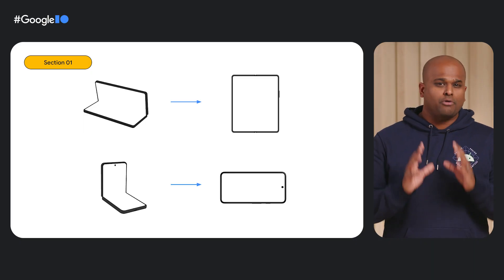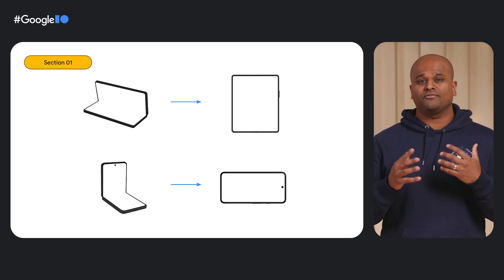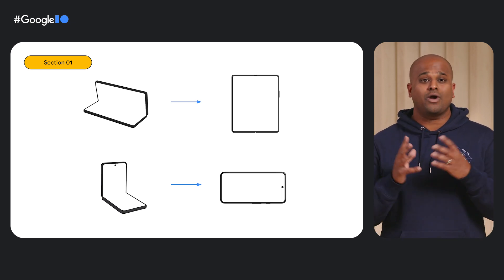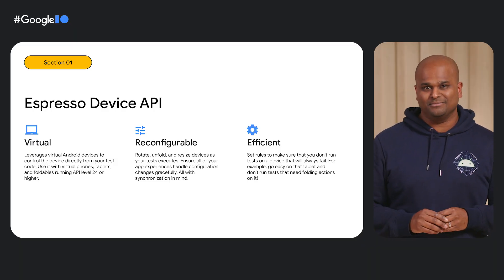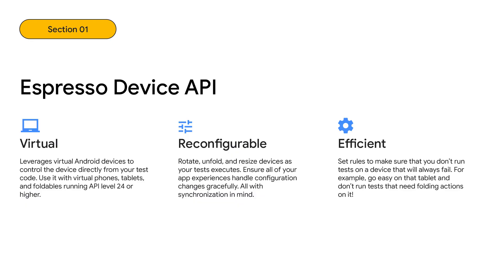Device configuration changes, such as rotating a device or unfolding a screen, are a common occurrence. Without proper testing, users may discover issues with layouts, persisting data, or app stability before you do. That's where the new Espresso Device API comes in. When using Android virtual devices running API level 24 or higher, this new API allows you to perform configuration changes during test execution in a synchronous way — so no more fiddling around with sleep functions.